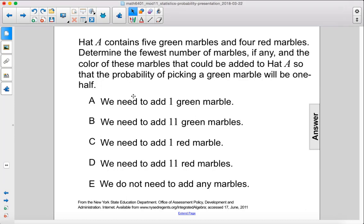Hat A contains 5 green marbles and 4 red marbles. Determine the fewest number of marbles, if any, and the color of these marbles that could be added to Hat A so that the probability of picking a green marble will be one-half.